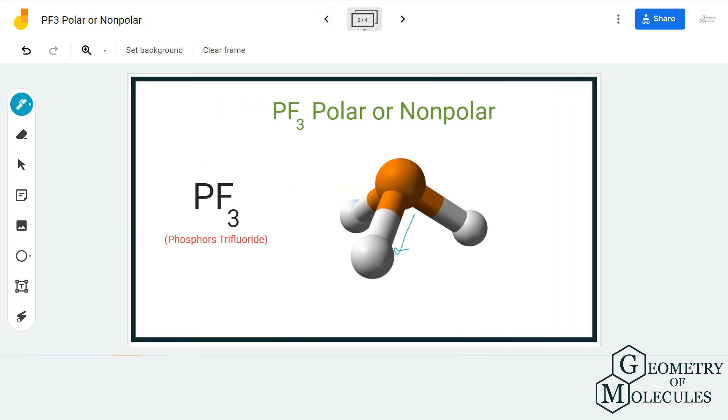So if it was a symmetrical molecule, these dipole moments might have cancelled each other out. But because there is a little bend in the shape of this molecule due to this lone pair which is present on the central atom, these dipole moments are not cancelled out.